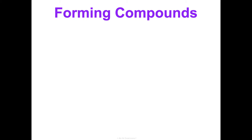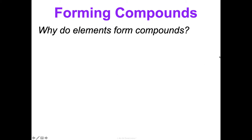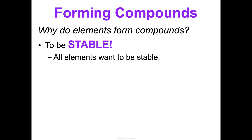Now let's talk about why compounds actually form. At this point you've already made observations about ionic versus covalent compounds from the lab, we've established that bonding is a spectrum, and we've familiarized ourselves with chemical formulas. So why do atoms form compounds? To be stable. Most elements are more stable when they're in a compound than when they're on their own.